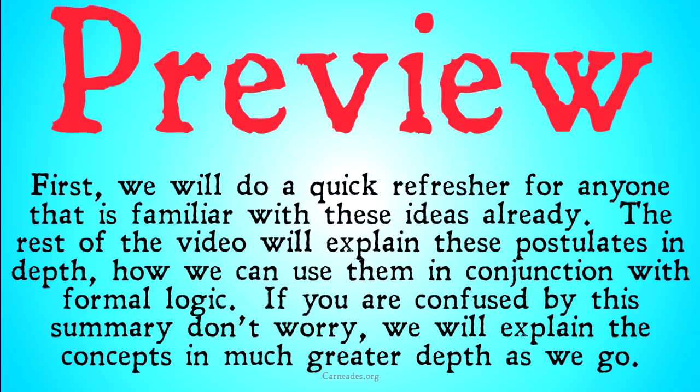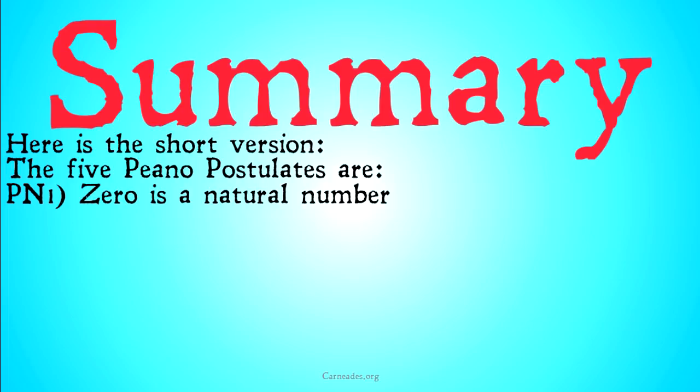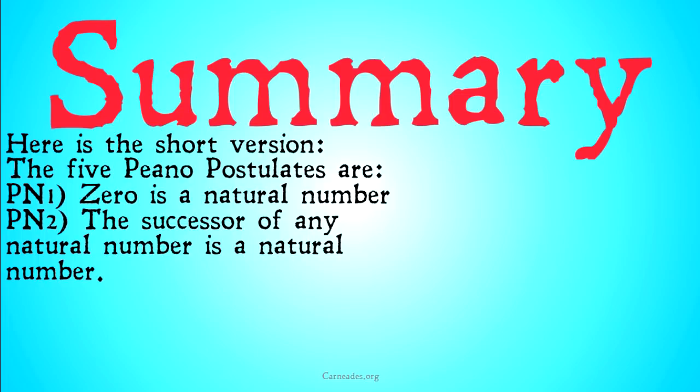Here's the short version. The five Pinot Postulates are: first, 0 is a natural number — we're defining this recursively, that's our starting point. Number two: the successor of any natural number is a natural number — that's our rule that gets from any one number to the next. The successor of 0 is 1, so 1 is also a natural number. The successor of 1 is 2, so 2 is also a natural number, and so on and so forth.